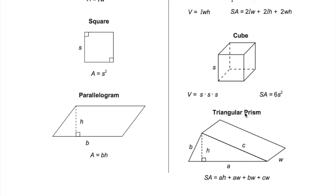I'm here on the formula sheet that the PSSA provides, and we're going to look at the formula for the surface area of a triangular prism. Here's the formula. SA, or surface area, is equal to AH plus AW plus BW plus CW.